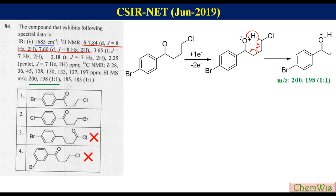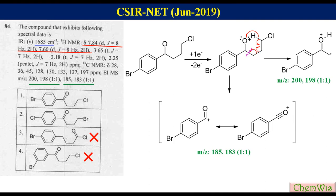It will undergo alpha cleavage to produce resonance stabilized carbocation that will show peaks at M/Z 185 and 183 with intensity ratio of 1 is to 1.